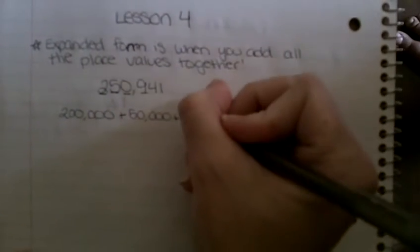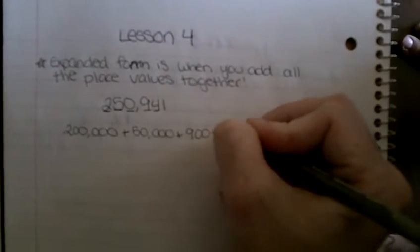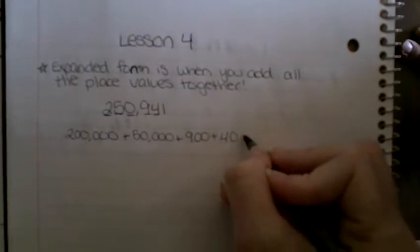I'm going to go on to the next place value right here. This is a nine and it's in the hundreds place value. So this equals nine hundred plus my next place value is in the tens digit. So this four is worth 40. And then plus my last digit, which is in the ones and it's a one. So just plus one. And this is your answer if it asks you to put your number in expanded form. They want it all written out like that in an addition problem.